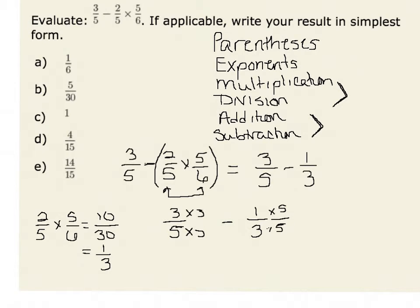Therefore, 3/5 minus 1/3 is equivalent to 9/15 minus 5/15, which results in 4/15.